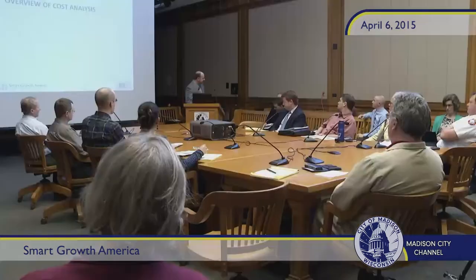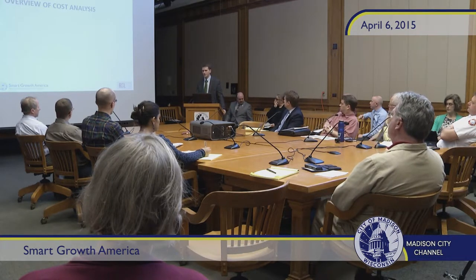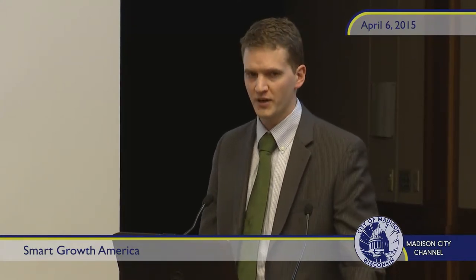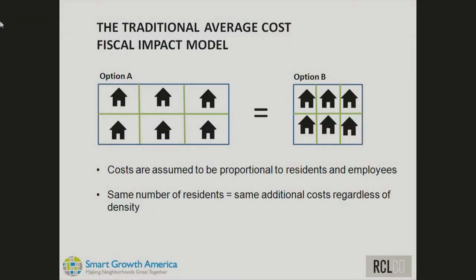I'm going to talk about how we did the cost modeling and give you an idea of the basic mechanics behind the model. People have been doing fiscal impact analyses for a long time using what's called the average cost approach: take total expenses for any given cost item, divide by total residents and employees in the jurisdiction, and apply that average cost to any new development. The problem is that regardless of whether a development is two units per acre or 20 units per acre, those average cost metrics stay the same.